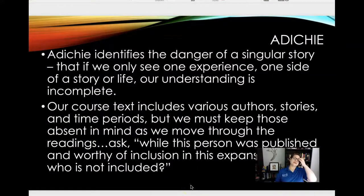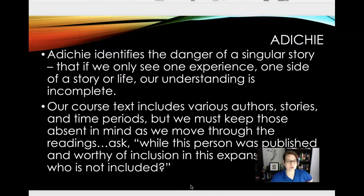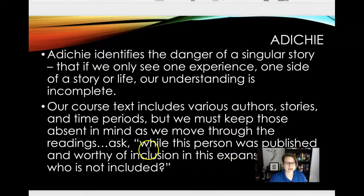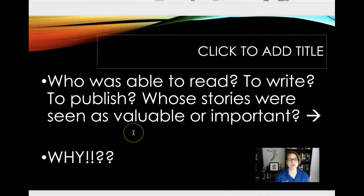I do want us to step back from the Romantic period and think about Chimamanda Adichie's TED Talk, which is really wonderful. She really wants us to understand — like I was talking about with the anthology — we don't want to see that anthology as a single story or the only version of who and what writing was important during these time periods. Our text includes various authors, but we must keep those absent in mind and ask: while this person was published and worthy of inclusion in this expansive text, who is not included? Who are those people who may be absent for whatever reason — who is able to read, write, publish? Whose stories were seen as valuable or important, and why?